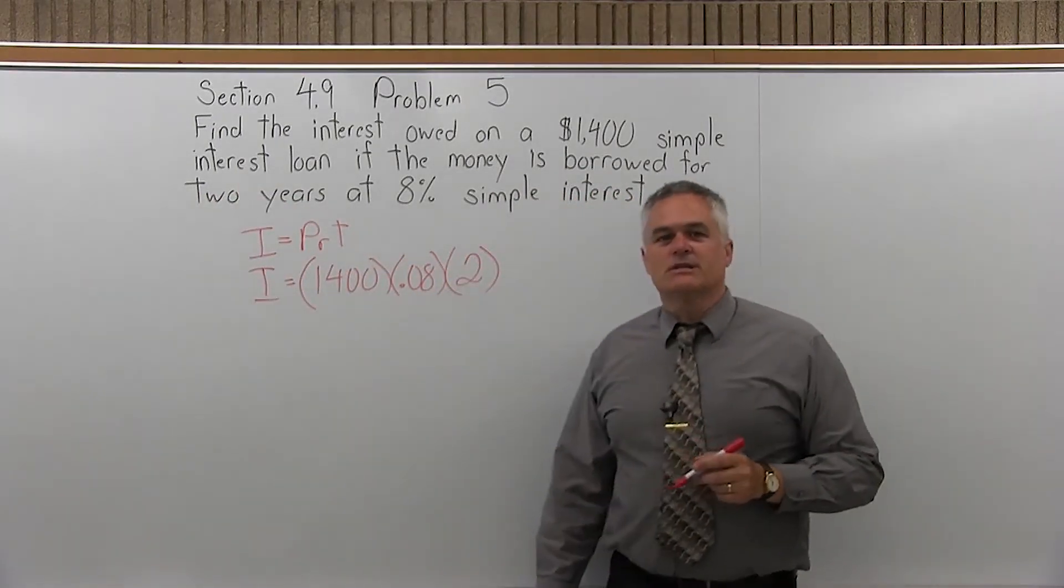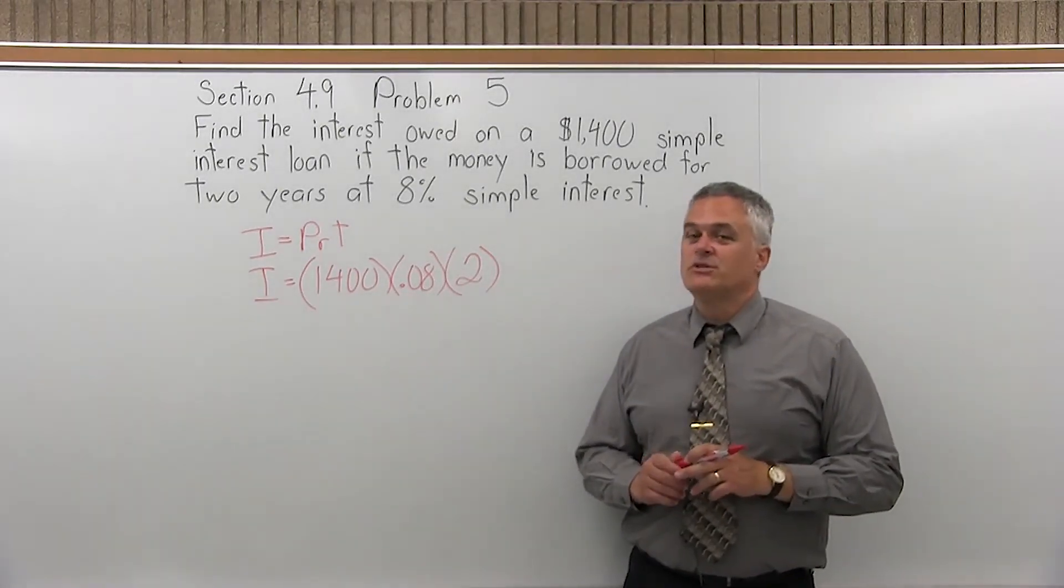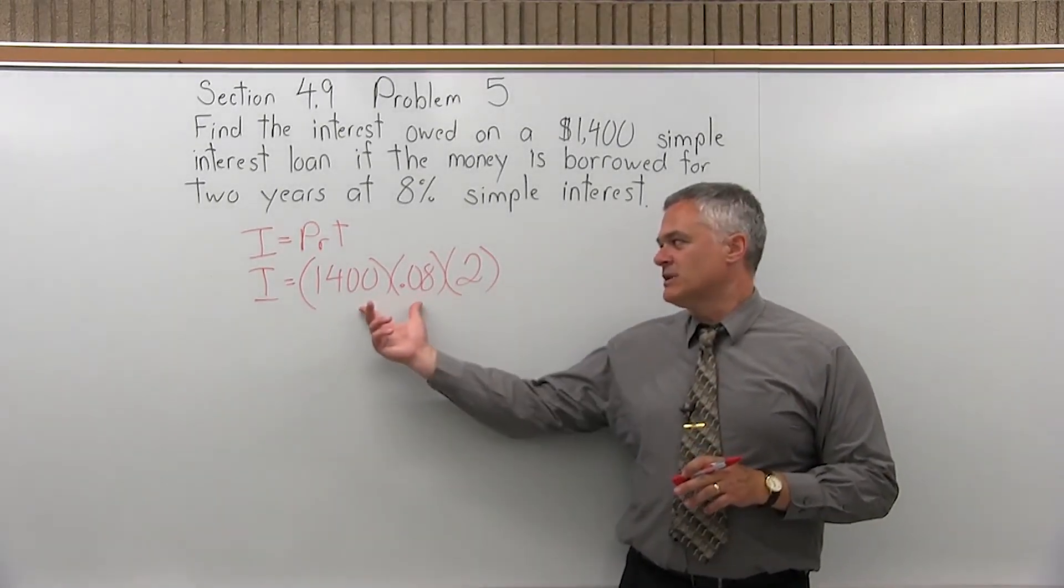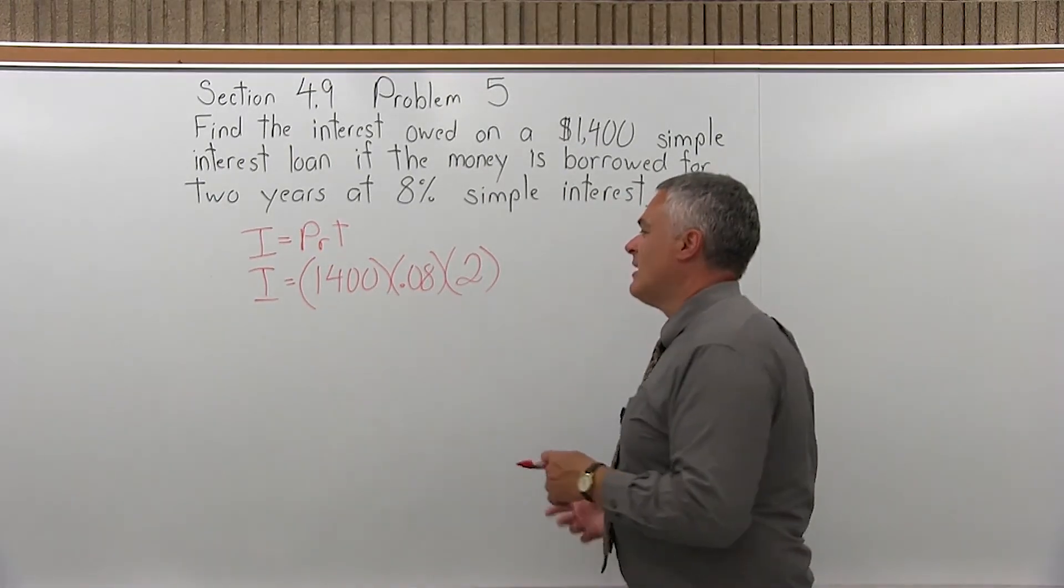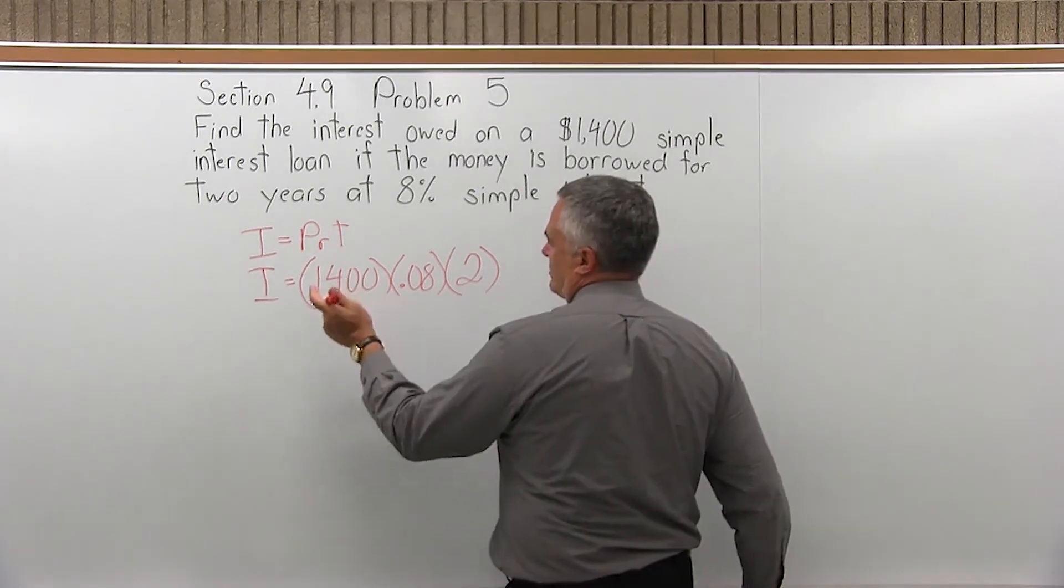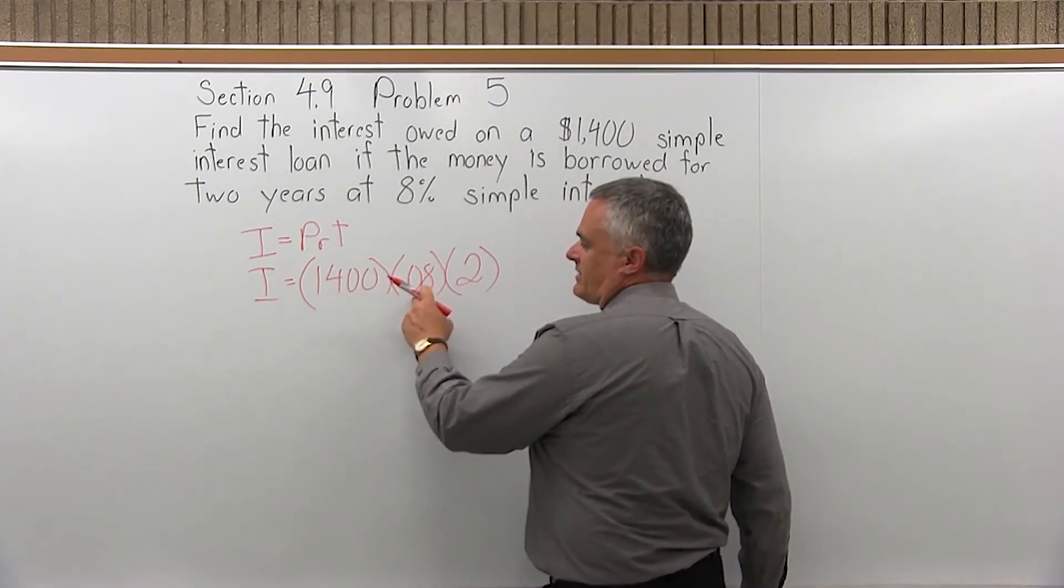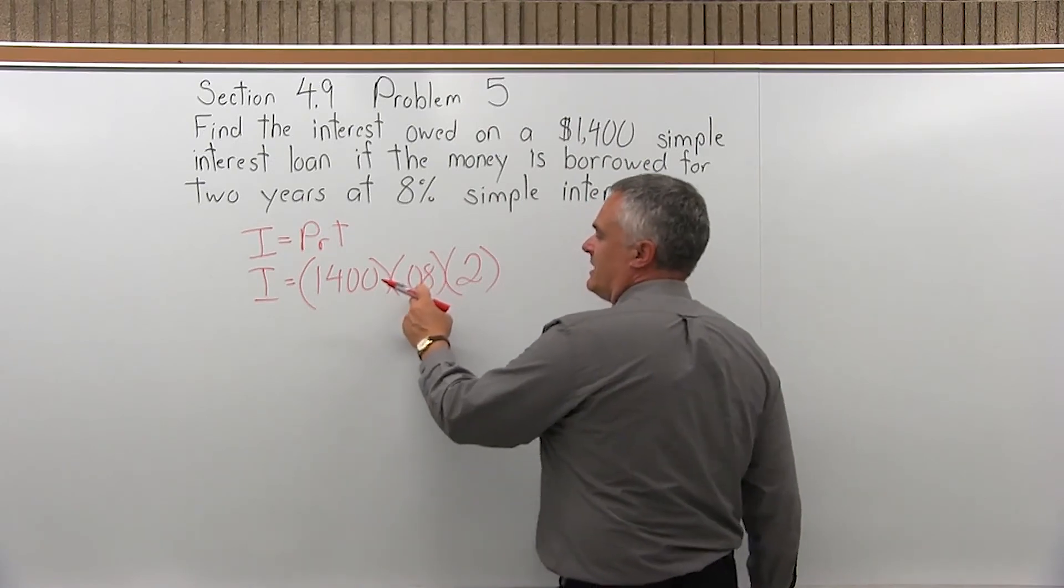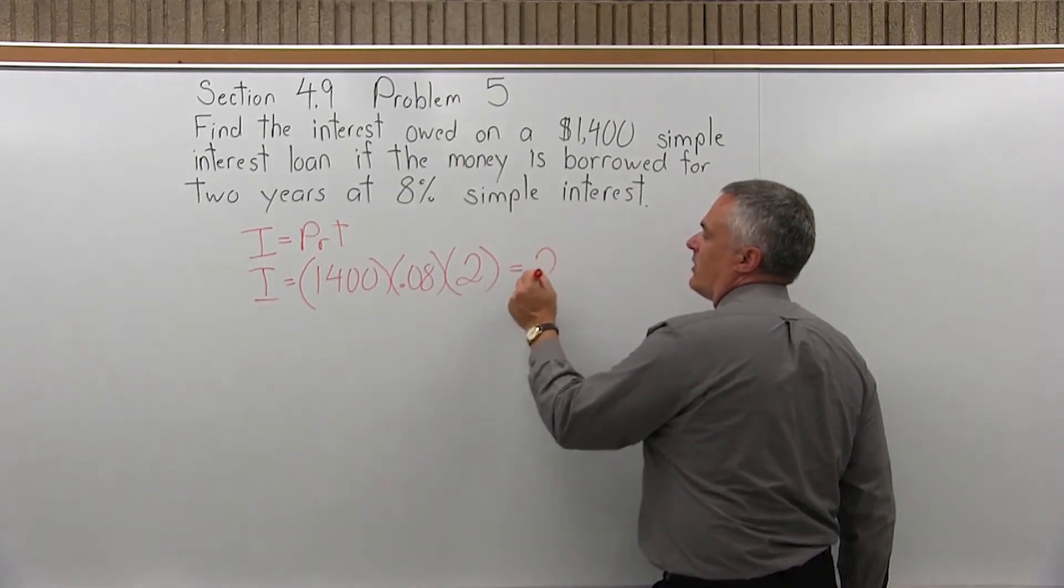And now that will calculate the interest. Now, if your teacher allows you to use a calculator for this class, and most teachers do for this section because the numbers get really big, especially for the compound interest. These you could multiply by hand, but the calculator is easier. Just turn on your calculator and multiply 1,400 times 0.08. That's going to come up to 112. Just leave that on the screen. Then multiply times 2, hit equals, and you'll get 224.